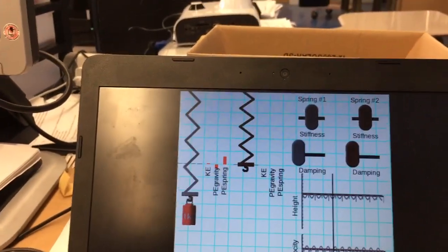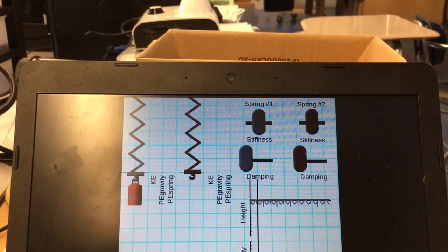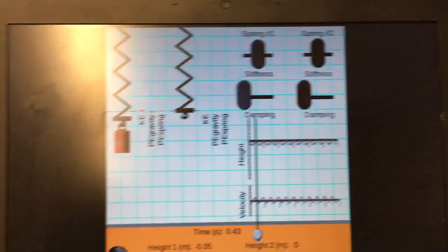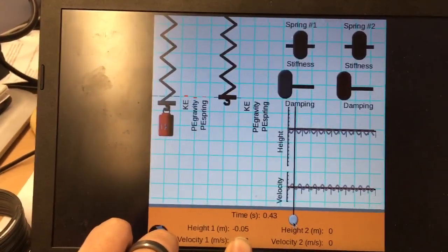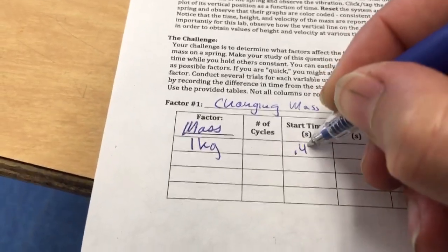And let's get a starting point. So I'm going to start right here at this peak, this peak right here. And it says that my height is negative 0.05. But more importantly, it says that the time is 0.43 seconds. So that's going to be my start time, 0.43 seconds.